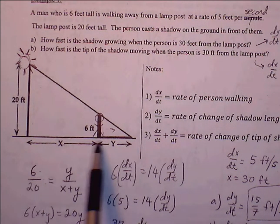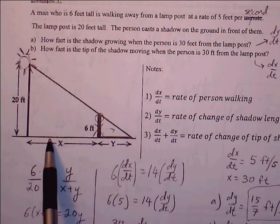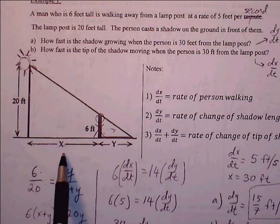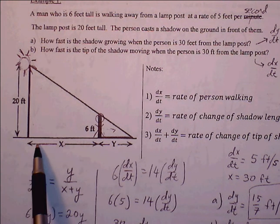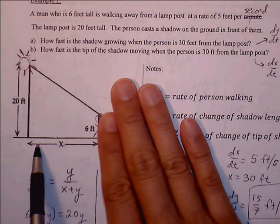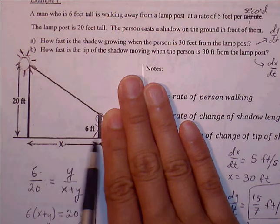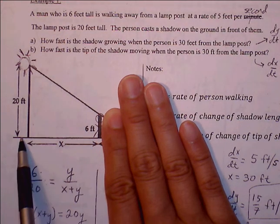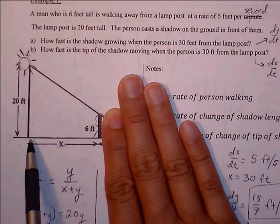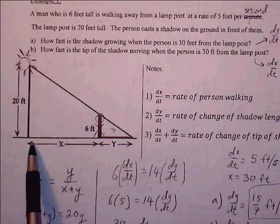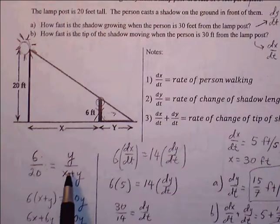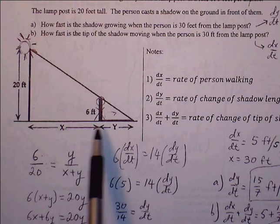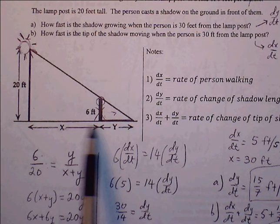You can see here the similar triangles where the ratios are equal to each other. We have the small triangle here and then we have a large triangle that extends all the way throughout the entire diagram.